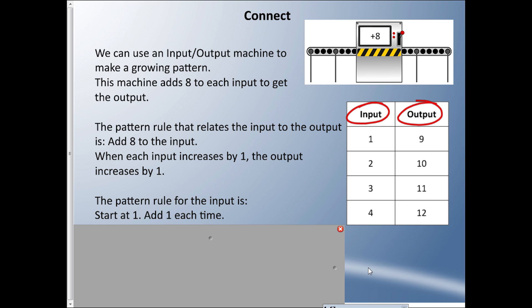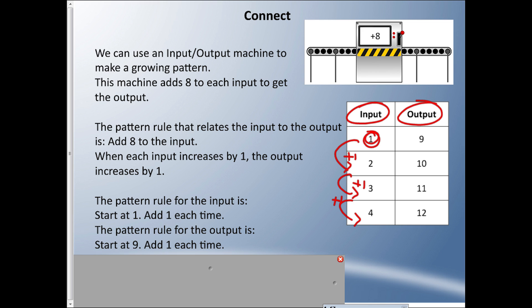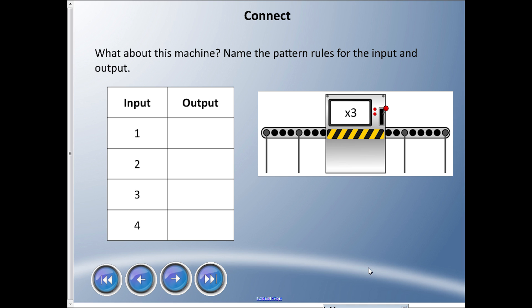Let's describe the pattern rules. The pattern rule for the input: we start at one and go up by one each time. The pattern rule for the output: we start at nine and go up by one each time. So we have three rules total: the input-output connection — we add eight to the input — both columns increase by one, the input starts at one going up by one, and the output starts at nine going up by one each time.